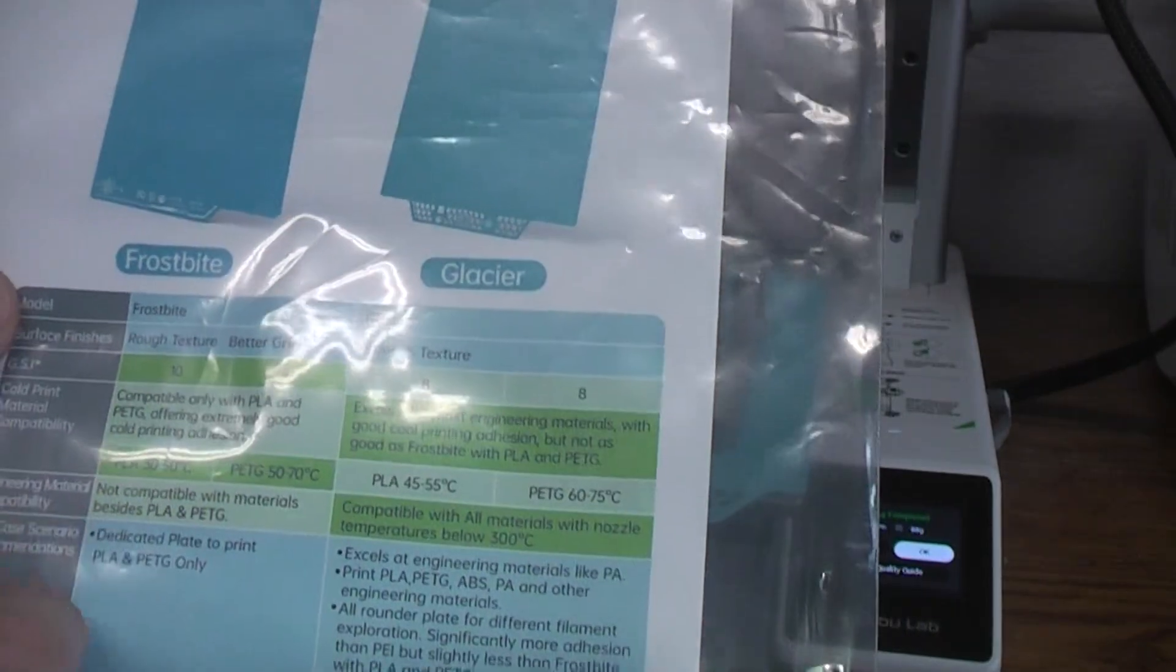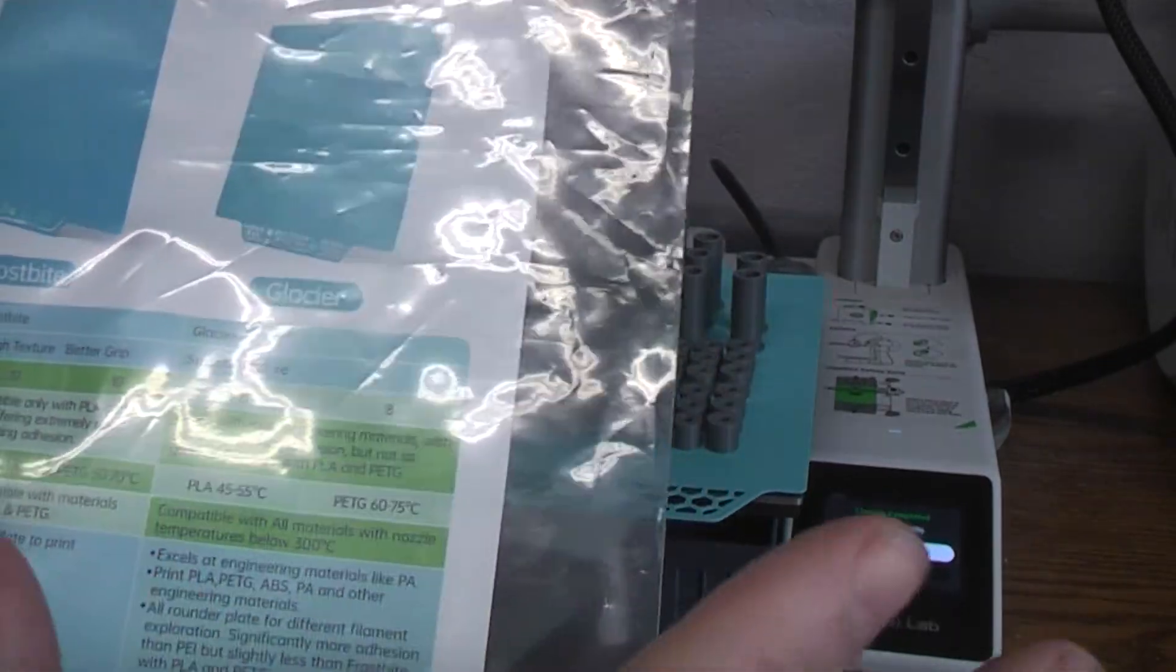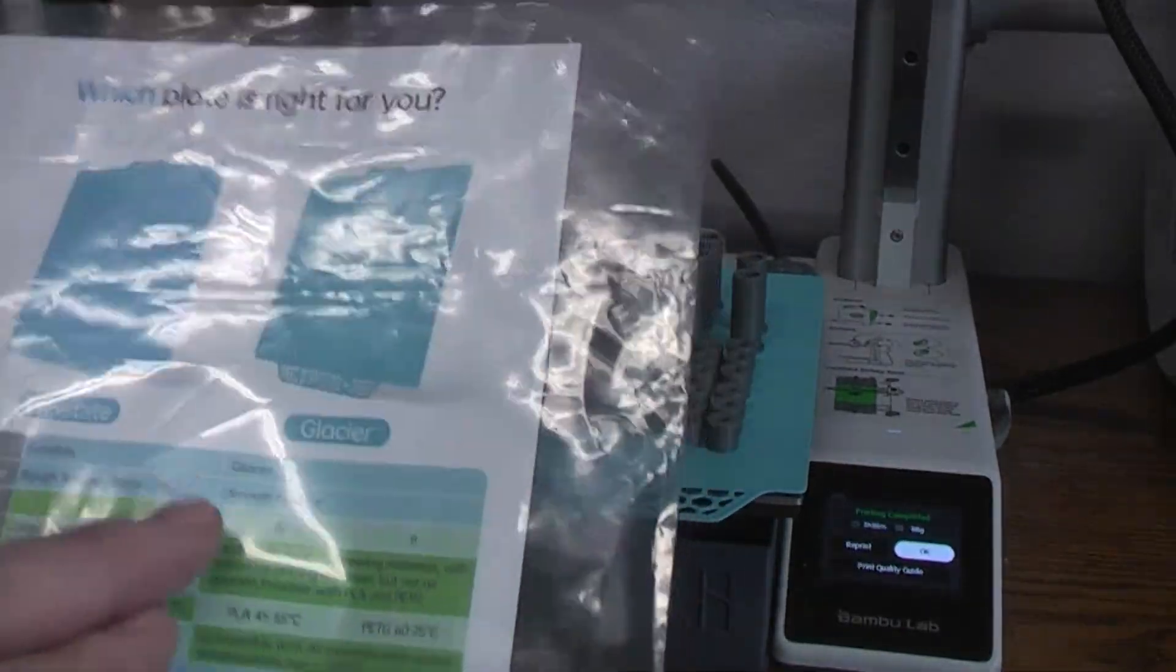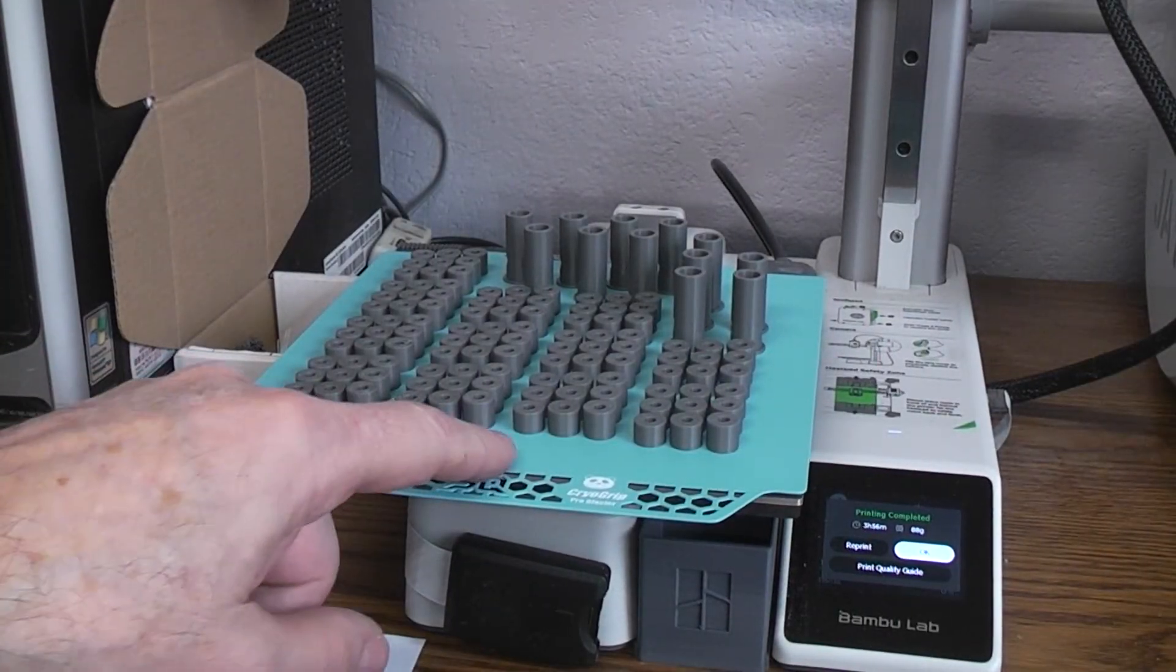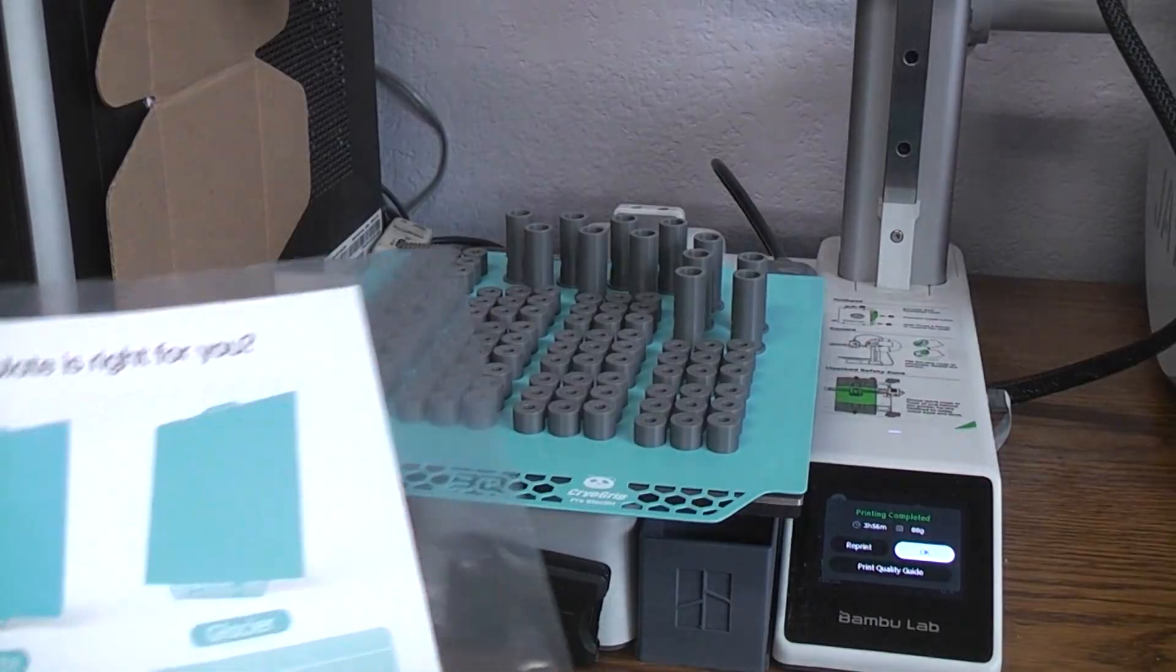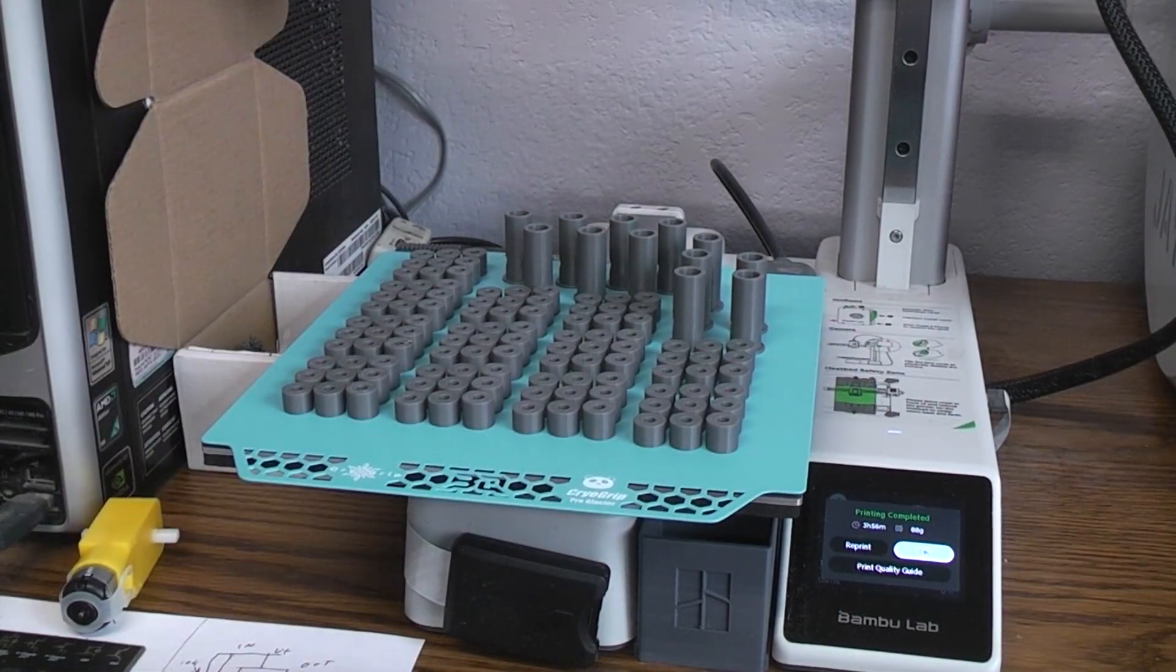So I went with their Glacier one. The Frostbite is only good for PLA and PETG. The Glacier is supposed to be good for basically all types of filaments. Doesn't quite have as good adhesion they're saying, but it has the smoother texture. I can use it for things like spacers and adapters.